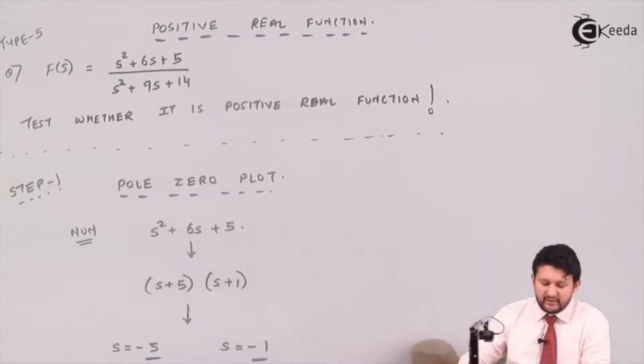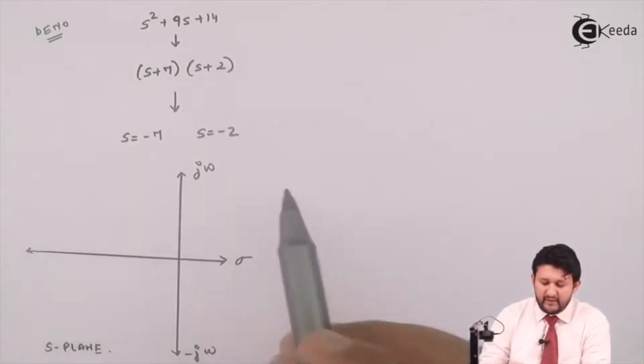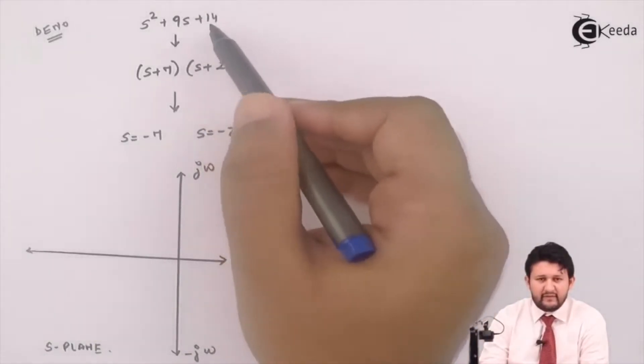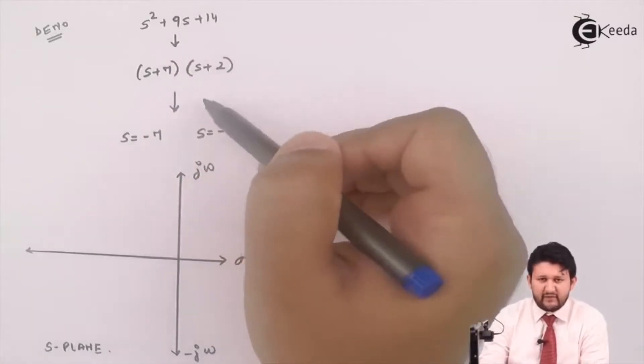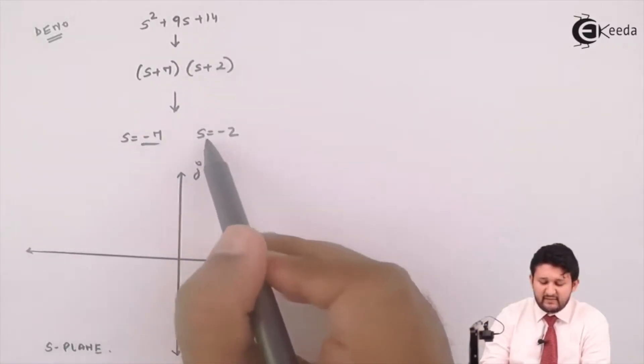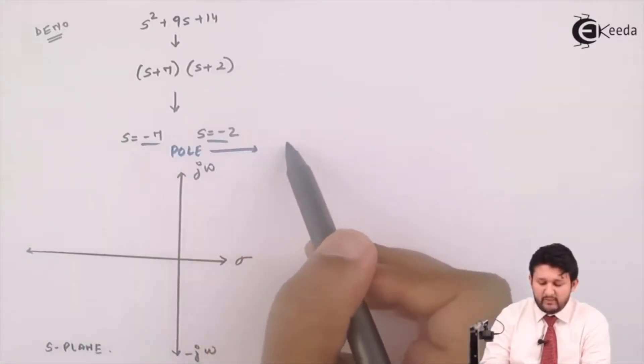Let's go for denominator. For denominator, this equation you have achieved from your question. Find the factors by using a scientific calculator, find the value for s. The value that you get, my dear friends, this value is nothing but your pole. The pole you plot by a cross.